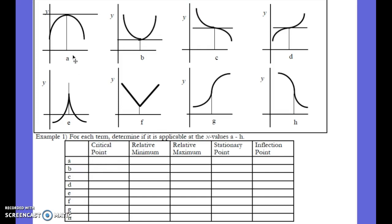Let's look at A through H and fill out the chart. For A: does it have a critical point? Yes. Is there a minimum? No. But there is a maximum. Is there a stationary point — a horizontal tangent line? Yes, right there. Is there an inflection point where it changes concavity? There is not. Keep going through B through H on your own, then I'll put the answers up in a few seconds.